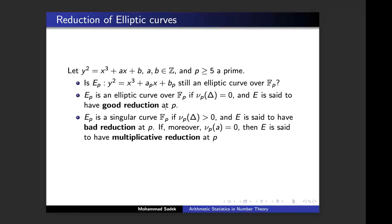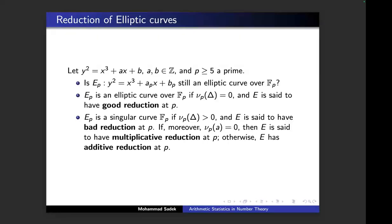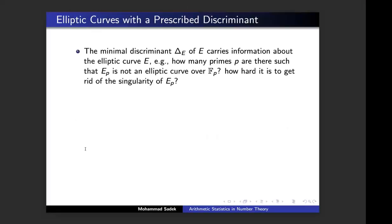Discriminants are important because they tell you how many primes are bad. Not only that, they tell you how hard it is to get rid of the singularity — a question for algebraic geometers. Here is a question about these important invariants, the discriminants: if I start with an integer, how many elliptic curves E are there such that the discriminant of E equals that integer?